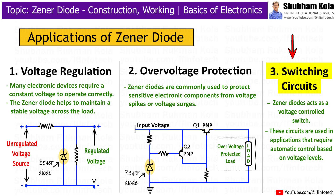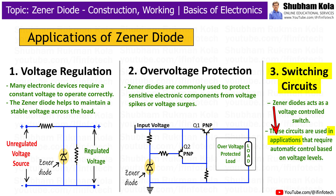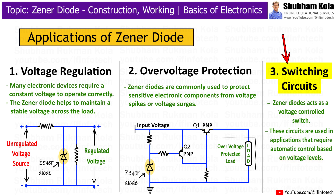Third is switching circuits. Zener diodes can also be used in switching circuits where they act as a voltage-controlled switch. These circuits are used in applications that require automatic control based on voltage levels. In such a circuit, the Zener diode is placed in reverse bias and monitors the voltage level. When the voltage reaches the Zener voltage, the diode conducts and triggers a switch to change states, either turning on or off another part of the circuit.